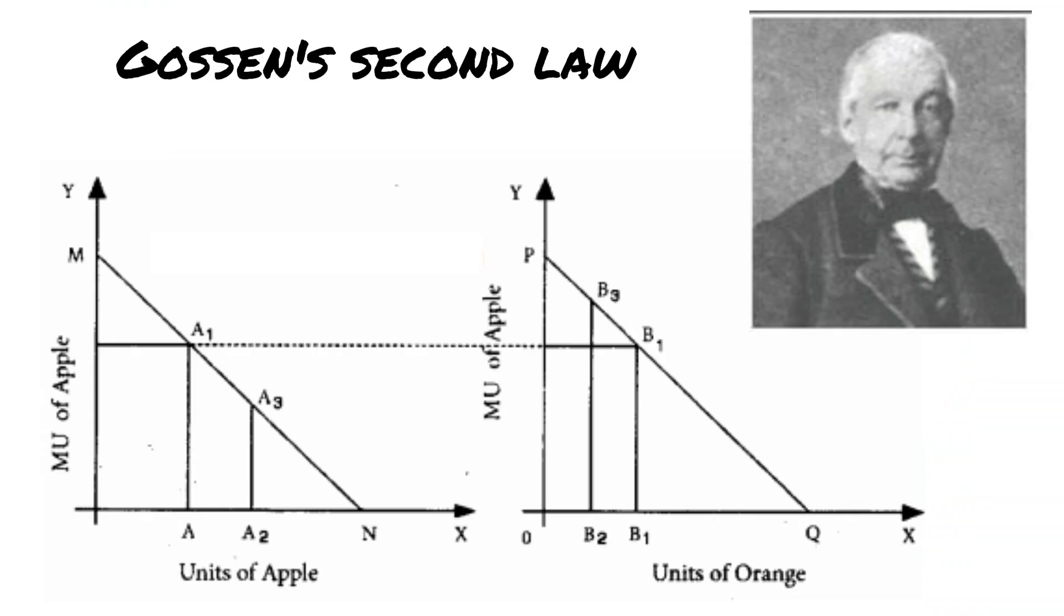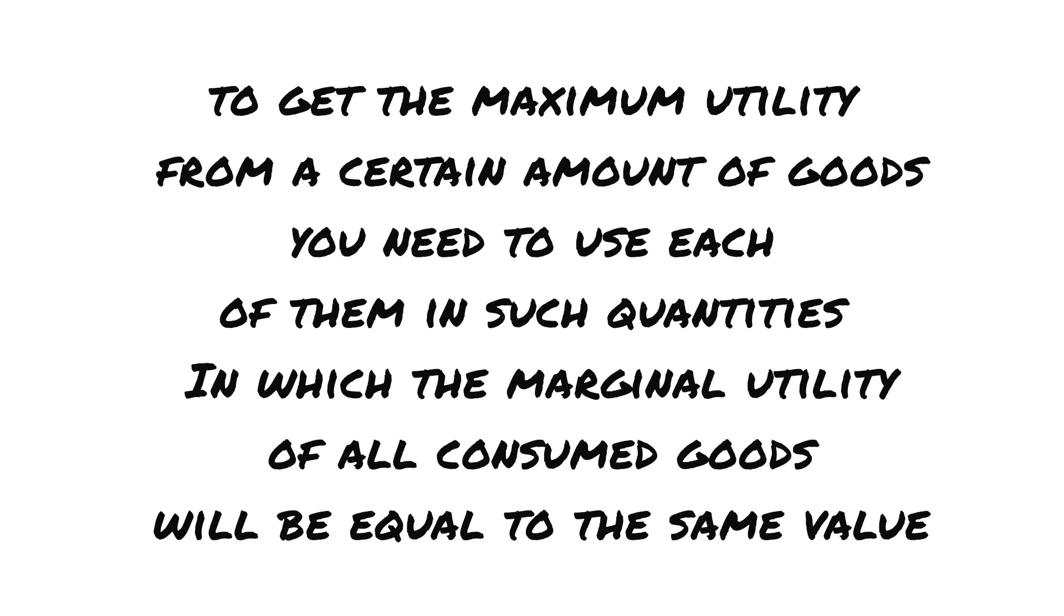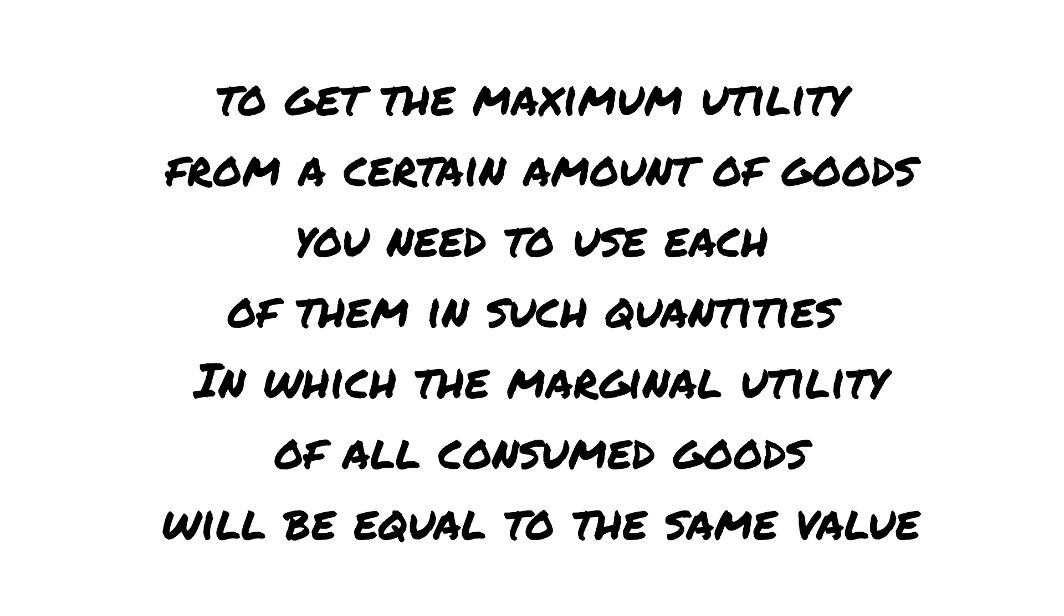The second law of Gossen or the law of maximizing total utility can answer the question. Its essence is to get the maximum utility from a certain amount of good. You need the usage of them in such quantities in which the marginal utility of all the goods consumed will be equal to the same value.